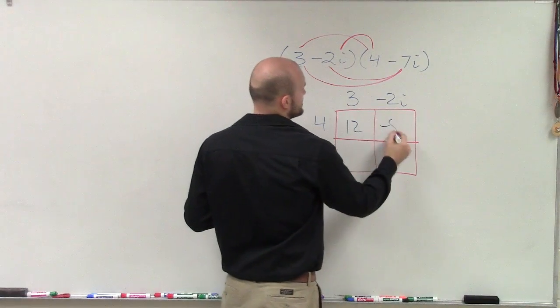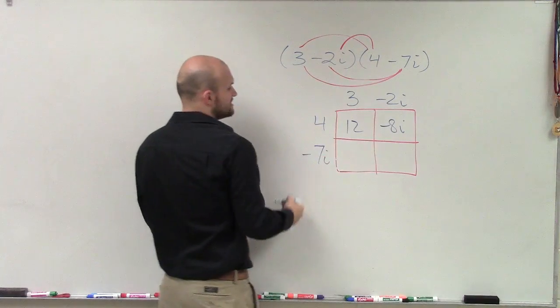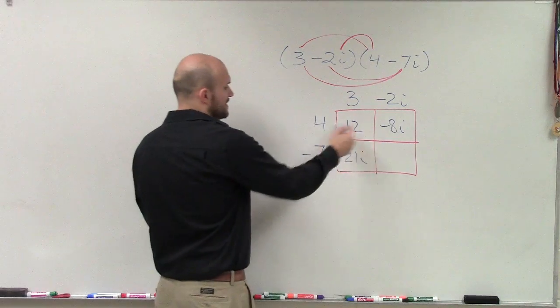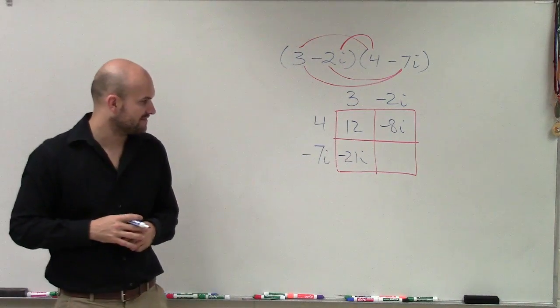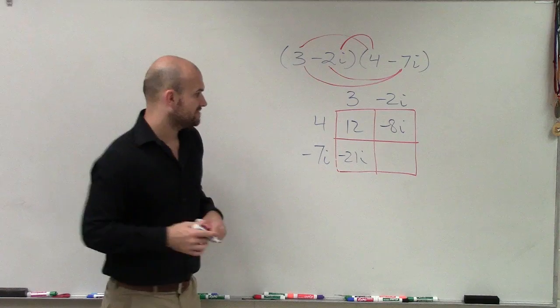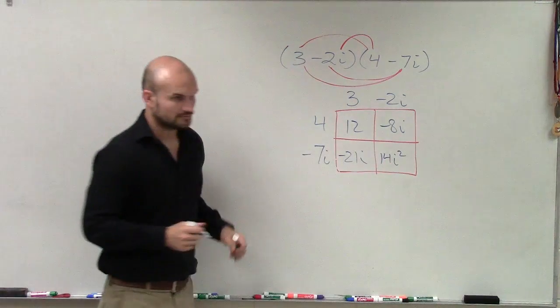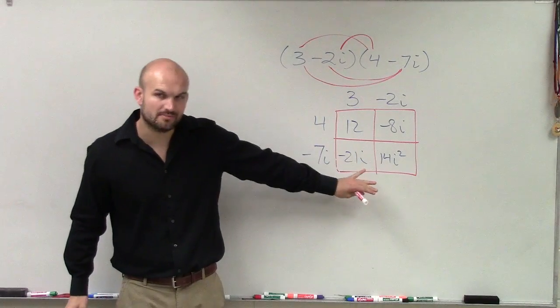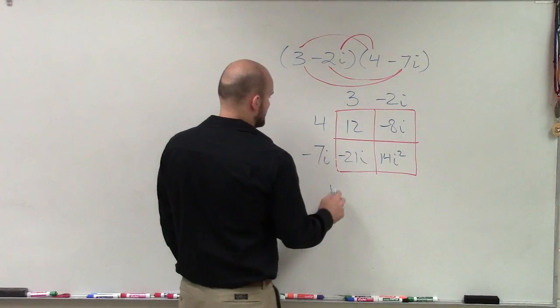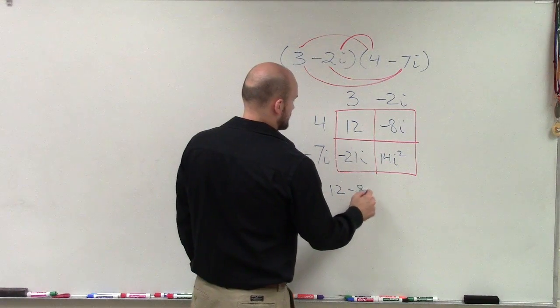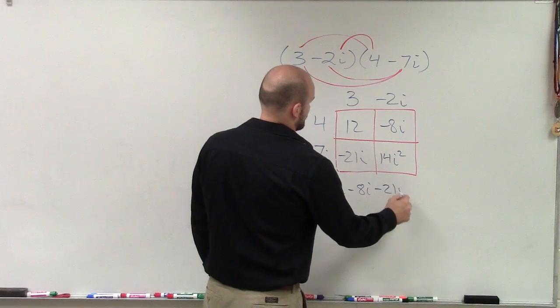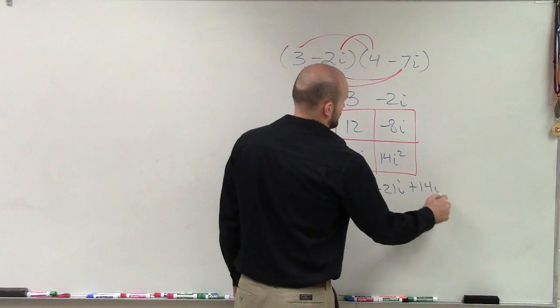3 times negative 7i is negative 21i. And then negative 7i times negative 2i is going to be a positive 14i squared. Now, you can simplify from in the box, but I'm going to write it out just to make sure nobody's making the same mistakes inside the boxes.